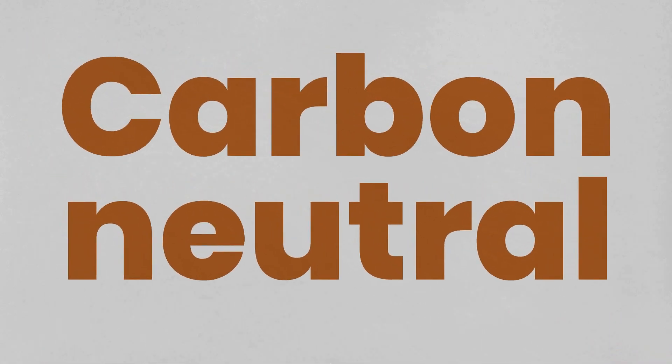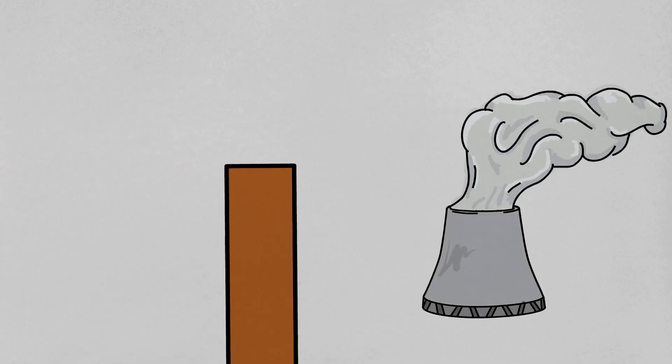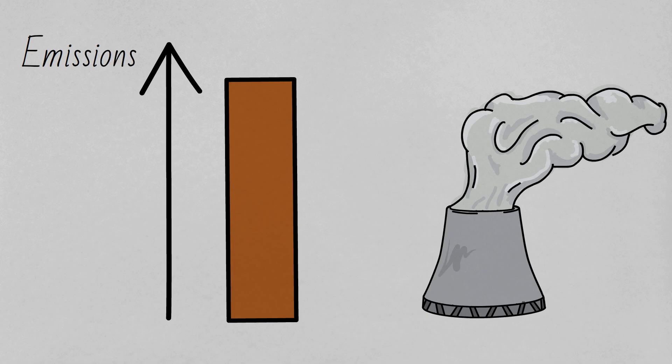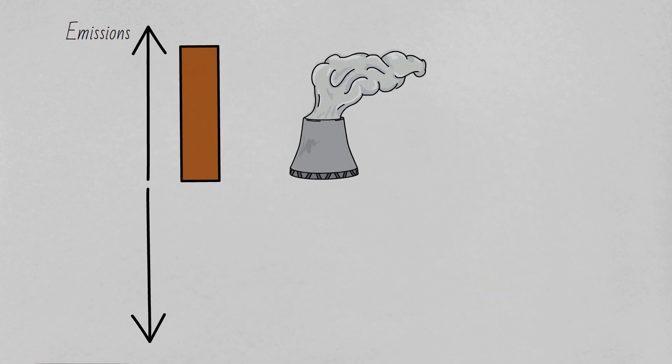Let's start with carbon neutral. A carbon neutral activity means that the carbon that is produced by that activity is offset or theoretically cancelled out by an equivalent amount being removed. Something called carbon offsetting.